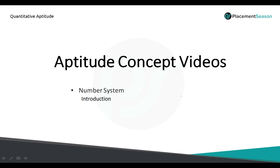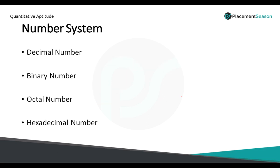So let's discuss various types of number systems which we use in quantitative aptitude. We have four different types: decimal number, binary number, octal number and hexadecimal number. In general, we represent the decimal number with a base 10, binary number with a base 2, octal number with a base 8 and hexadecimal number with a base 16.